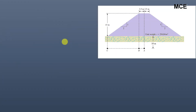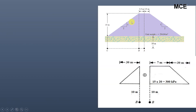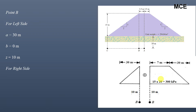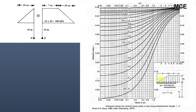Next, we find the vertical stress increase at point B. We make point B the corner of the embankment loading by dividing the embankment into a triangular portion and a trapezoidal portion. For the left triangular side: a = 30 m, b = 0; for the right trapezoidal side: a = 30 m, b = 7 m; z = 10 m for both.